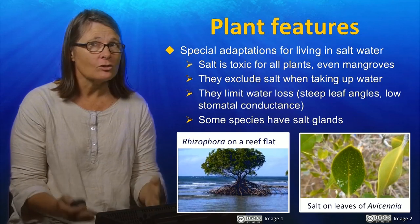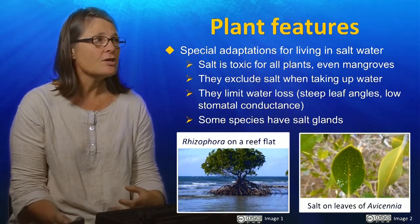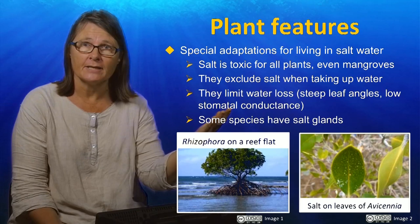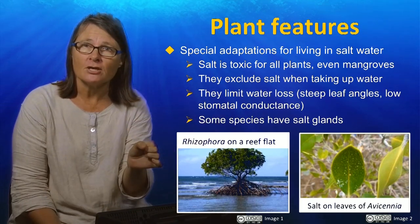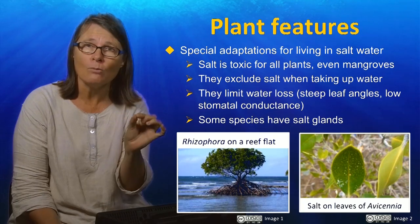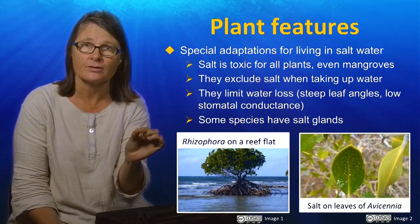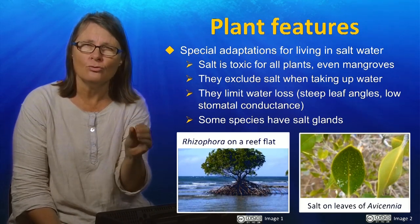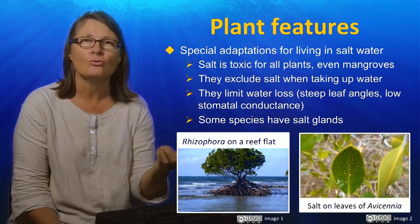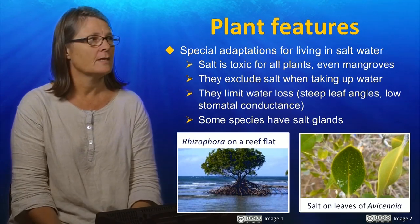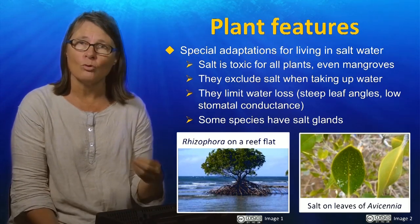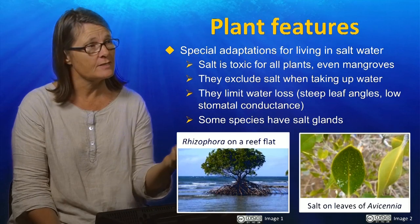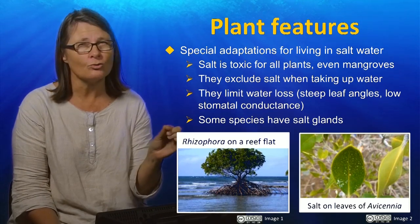In addition to excluding the salt at the root surface, they also have some other tricks. They limit their water loss when they do photosynthetic carbon gain. Plants take up carbon dioxide from the atmosphere through very small pores called stomata on the leaf surface. Mangroves limit the amount of water they lose through those pores, and that gives rise to very low stomatal conductance. In addition, some species have salt glands, so they actually excrete the salt from their leaf surface.